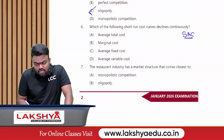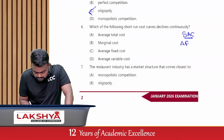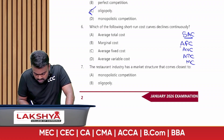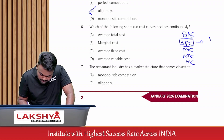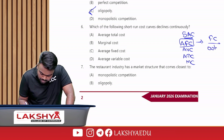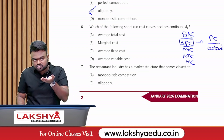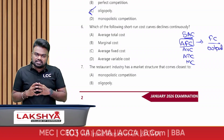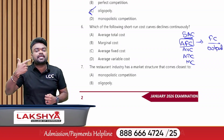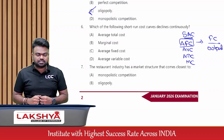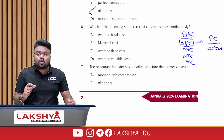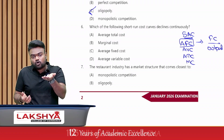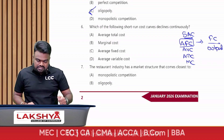Next: which short-run cost curve declines continuously? In the short run, there are four types of cost: AFC, AVC, ATC, and MC. Average fixed cost = fixed cost divided by output. Fixed cost does not change with output, so the numerator is constant while the denominator (output) increases.